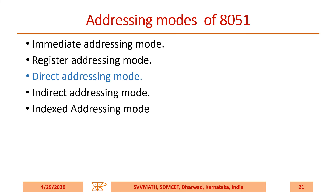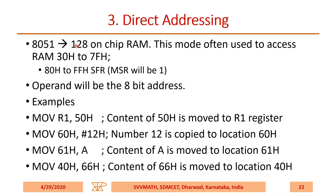In direct addressing mode, the 8051 has 128 bytes of on-chip RAM. This mode is often used to access the RAM area between 30H and 7FH. From 88H to FFH, we have special function registers. The operand is an 8-bit address. Examples: MOV R1, 50H — the content of address 50H is moved to R1; MOV 60H, #12H — the number 12H is copied to location 60H; MOV 61H, A — content of A is moved to location 61H. Whenever you use direct addressing, addresses appear as part of your instruction.